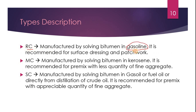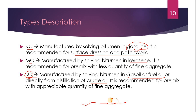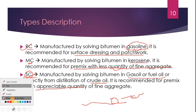To manufacture RC, gasoline is used as solvent. To manufacture MC, kerosene is used as solvent. To manufacture SC, gas oil or fuel oil is used — or it is directly obtained from distillation of crude oil. RC is used in surface dressing and patchwork. Patchwork means filling small pot-hole-like patches in flexible pavement. MC is used for premix with less quantity of fine aggregate. With appreciable (more) quantity of fine aggregate, RC is used. Generally MC is used.